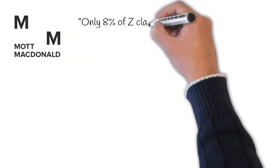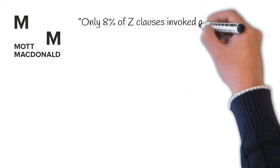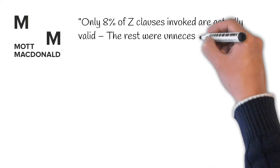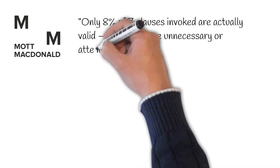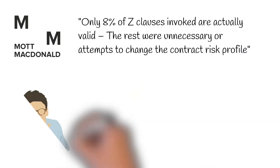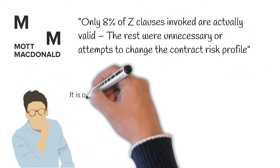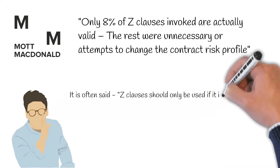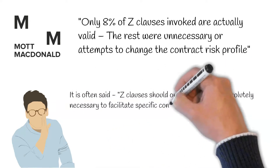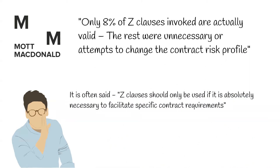Mott MacDonald's research found that only 8% of Z clauses invoked are actually valid. The rest are unnecessary or attempts to change the contract risk profile. It is often said the Z clause should only be used if it is absolutely necessary to facilitate specific contract requirements, and it seems the data supports this claim.